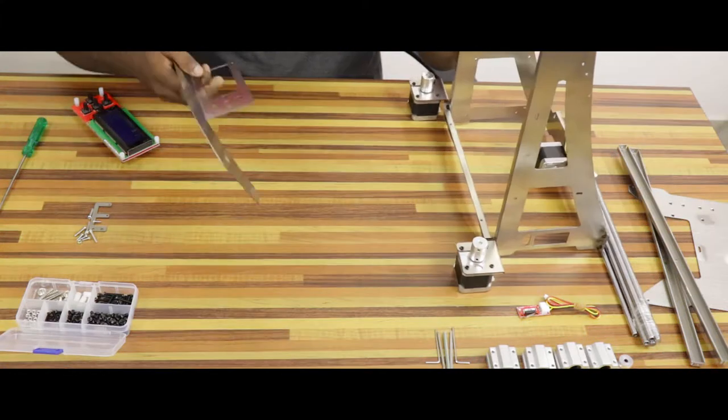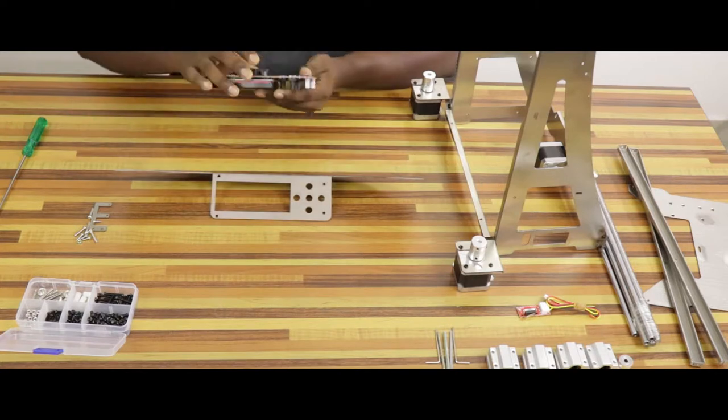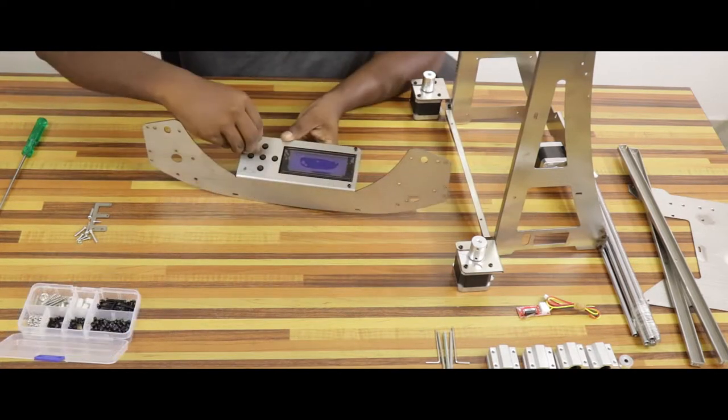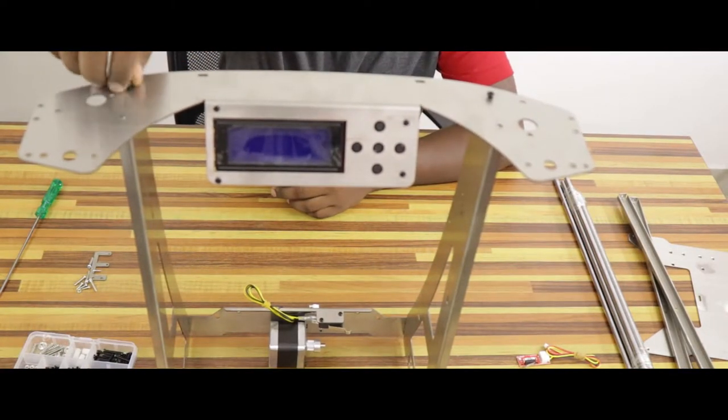Now, we can attach the LCD module to the top frame using four M3 6mm screws. The LCD module also has the keypad to control the printer. Let's install this frame using four M4 6mm screws. The structure is almost ready.